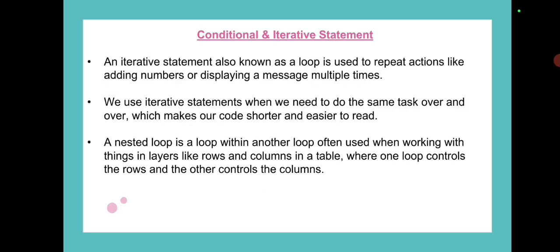Iterative statement is what we call loop. We use iterative statements when we need to do the same task over and over, which makes our code shorter and easier to read. A nested loop is basically a loop within another loop, often used when working with things in layers like rows and columns in a table, where one loop controls the rows and the other loop controls the columns.